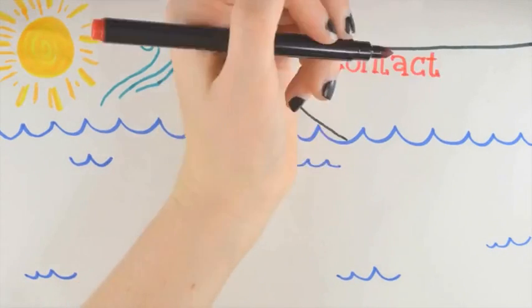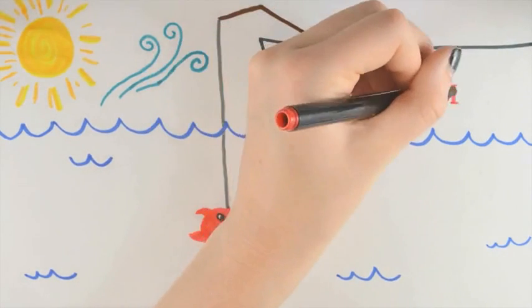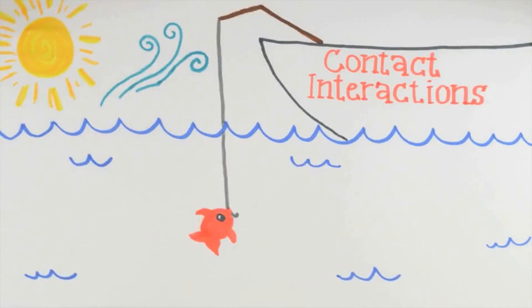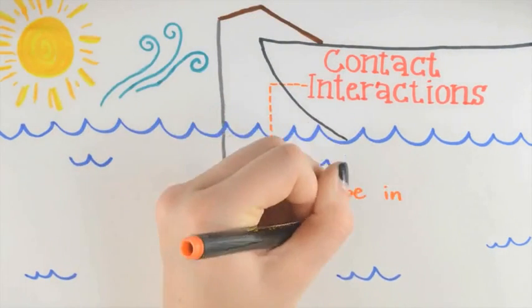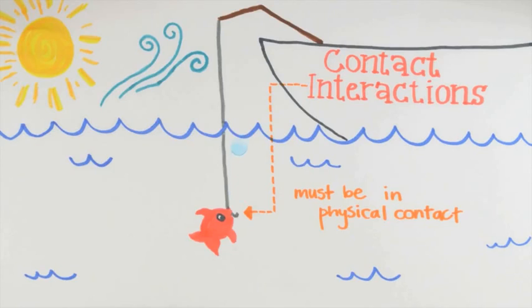Some of the interactions we've discussed so far belong to a class we call contact interactions. The term contact here means the agent in the surroundings must typically be in physical contact with the object in order to exert a force on the object, in order to have an interaction.